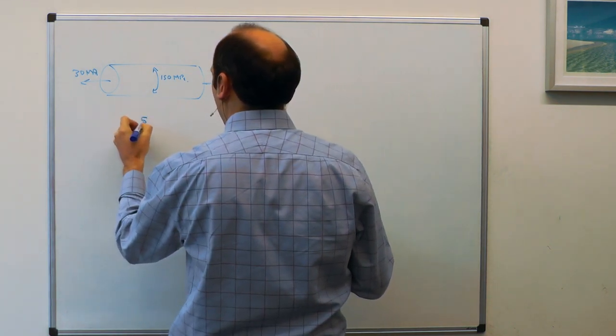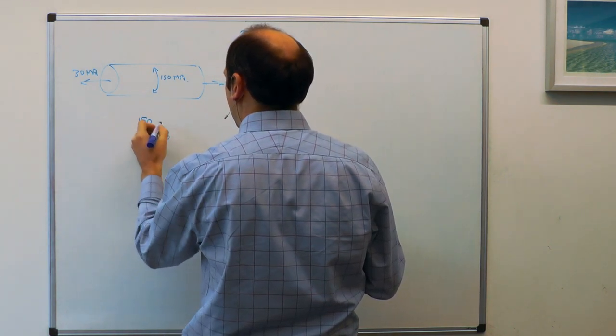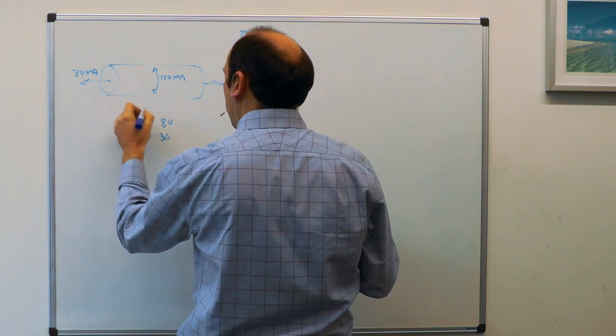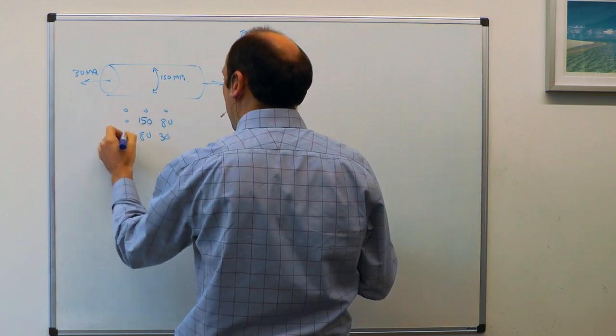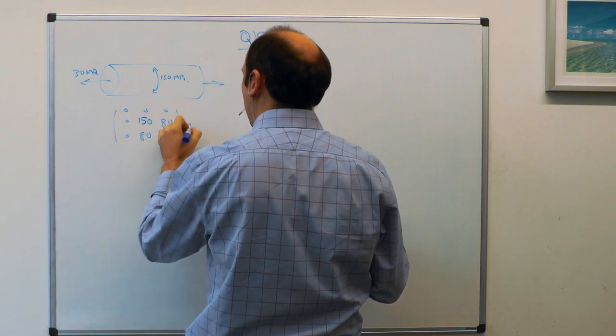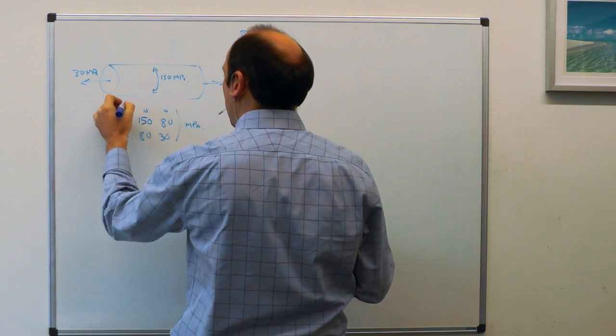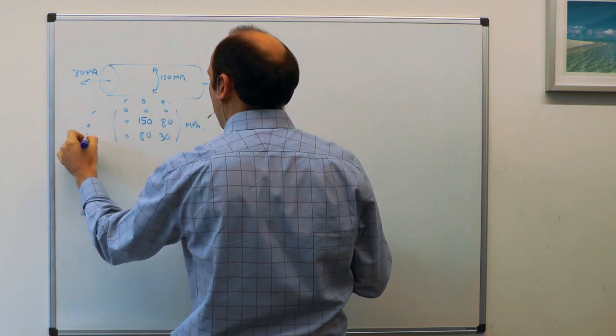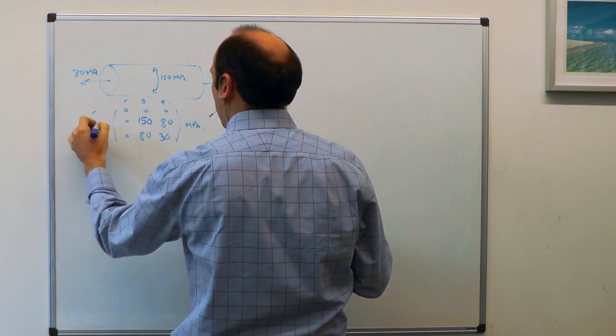So if we write it down, we've got 150, 30, 80, 80. And actually if we were going r theta z, we need to remember life is really 3D. So if we're going r theta z, r theta z, that would be our stress tensor.